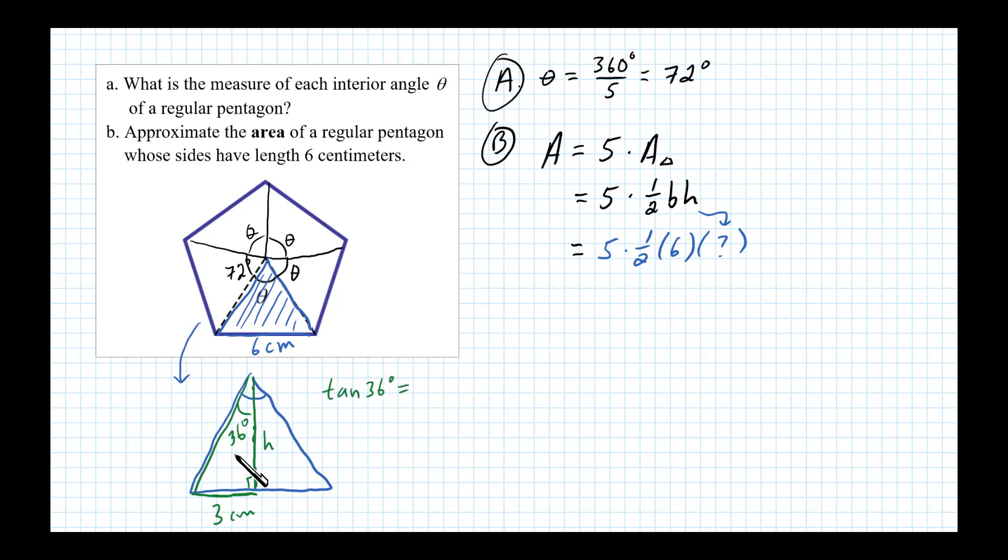Remember tangent is opposite over adjacent, so tangent of 36 degrees is 3 over h. Cross multiplying, h times tangent of 36 degrees equals 3, and then dividing, the height is actually equal to 3 over tangent of 36 degrees.